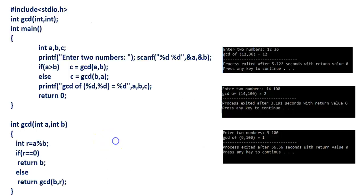Now we see the program. This is the program. First of all, we see the output. It says: GCD of 12 and 36 is equal to 12, GCD of 14 and 100 is equal to 2, and GCD of 9 and 100 is equal to 1.